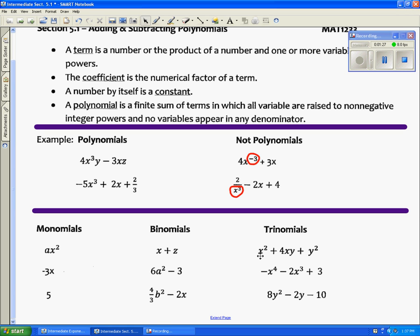And trinomials have three terms: one, two, three. Then there's three terms here: one, two, three. So mono, bi, and tri are just special names for polynomials.